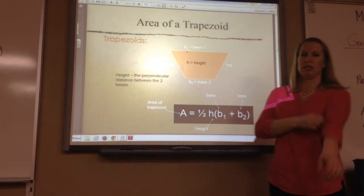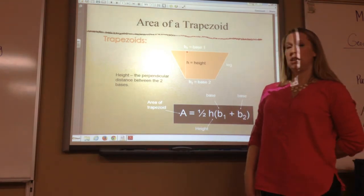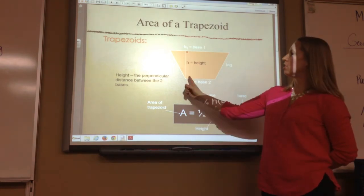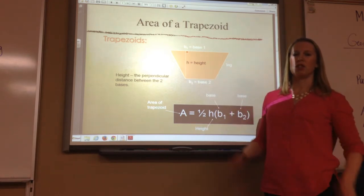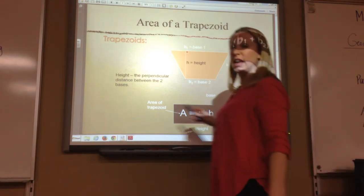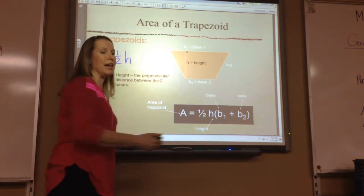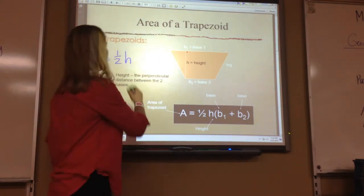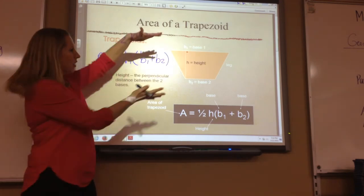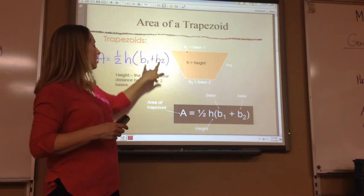Go to your trapezoid picture — this is the one that's upside down. Label the top one base 1, the bottom base 2. Then draw in the height and label that the height. The two sides that are not parallel to each other are called the legs. The area formula of any trapezoid is half the height — the height is the distance between the bases — times base 1 plus base 2. You add your bases together, multiply by the height, and divide by two at the end.